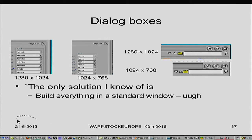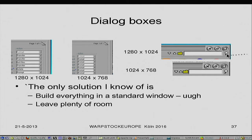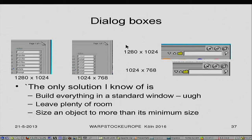One solution is to build everything using standard windows — you look first at the size of the screen, then say I need a window half that size, 512 pixels wide. The other way is just to leave plenty of room when you're designing your dialogs. It's the same problem with text — text works perfectly in one language and in the next language it's far too long. So using dialog boxes is very easy and handy for the programmer, but it has its limitations.